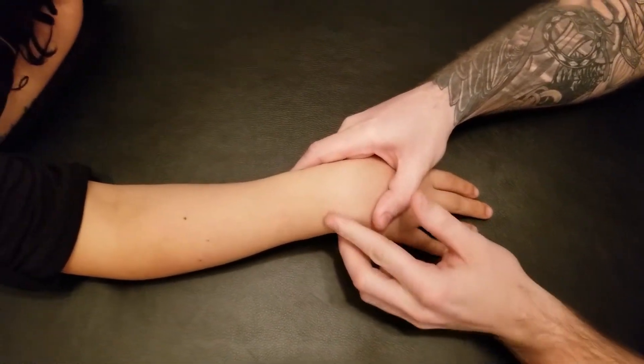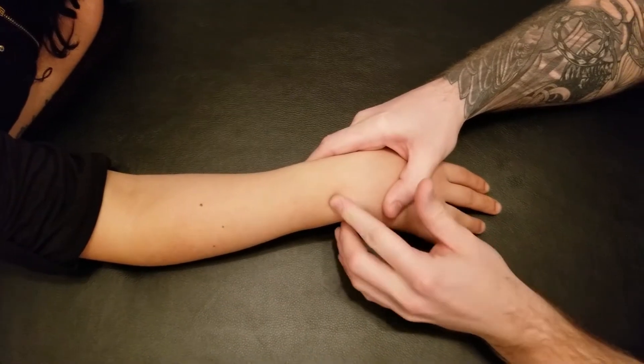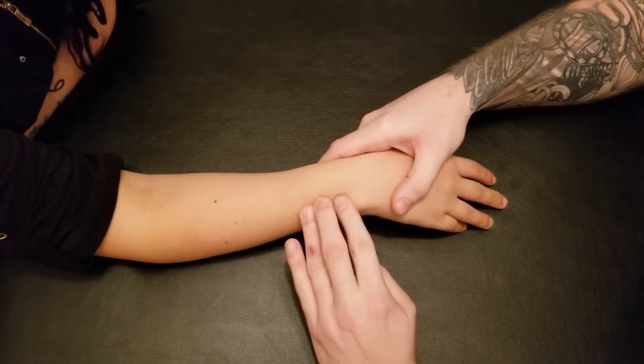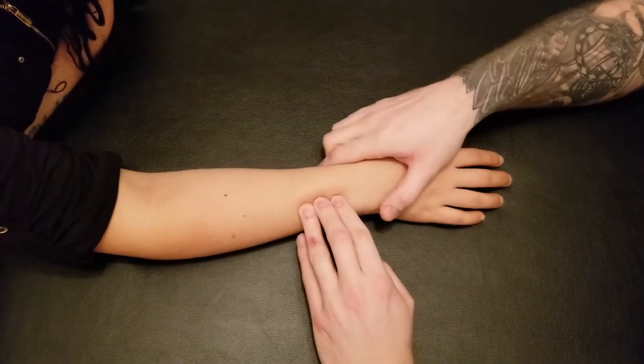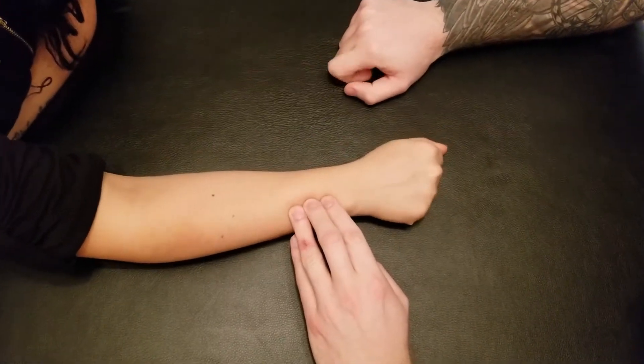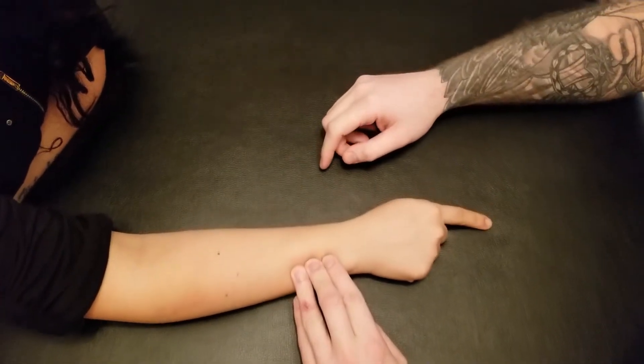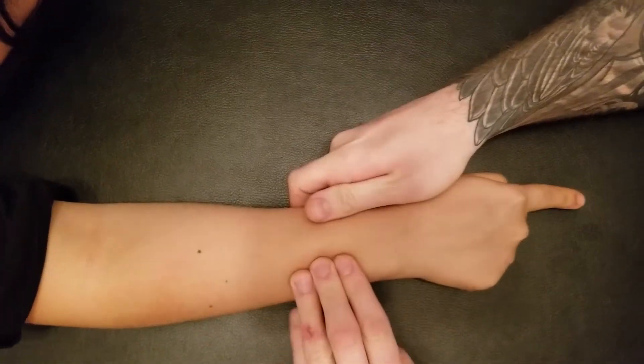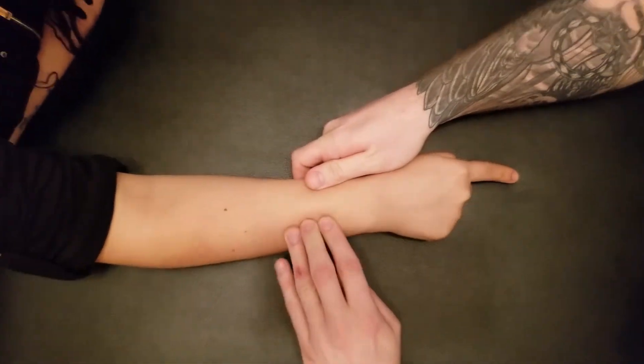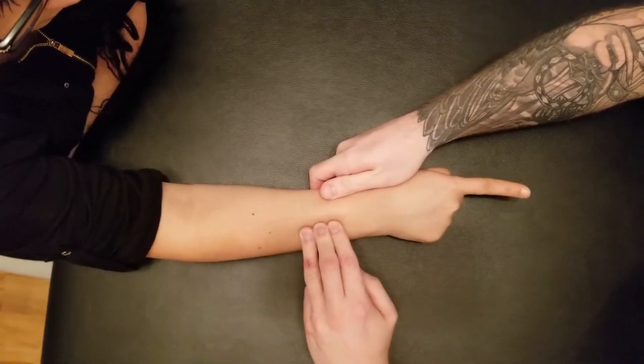One of the things I can use is identifying the head of the ulna here and then palpating just proximal to that and sinking in. I'm going to have you make a fist but then just do extension of your second digit for me. I'm just going to place my fingers over top of this muscle belly and you should easily be able to feel it going up and down.